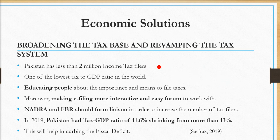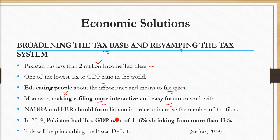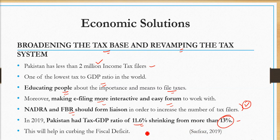Broadening the tax base and revamping the tax system: Pakistan has less than 2 million income tax filers and one of the lowest tax-to-GDP ratios, which is a concern. We should educate people about the importance and means of filing taxes, make e-filing more interactive and easy, and the FBR should form liaison to increase the number of filers. Pakistan's tax-to-GDP ratio is 11.6 percent, which has shrunk from 13 percent — it should be going upward, but it is going downward, which will impact the fiscal deficit.